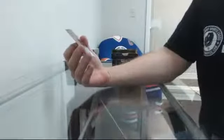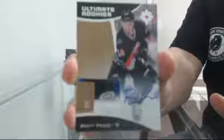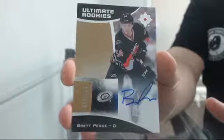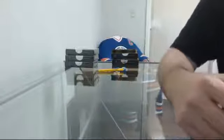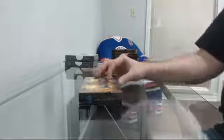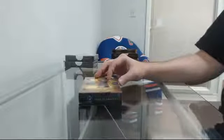And Ultimate Rookie, 78 out of 299 going to my good pal Brian and his Carolina Hurricanes, Brett Pesce. Box 3. Wait. Brian, you had Carolina, didn't you? I'll take that as a yes.